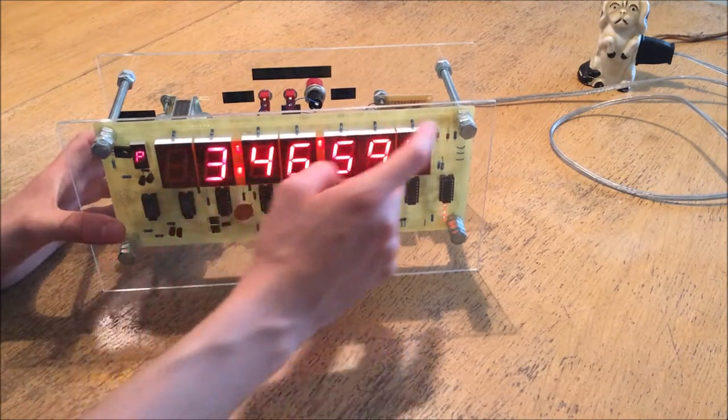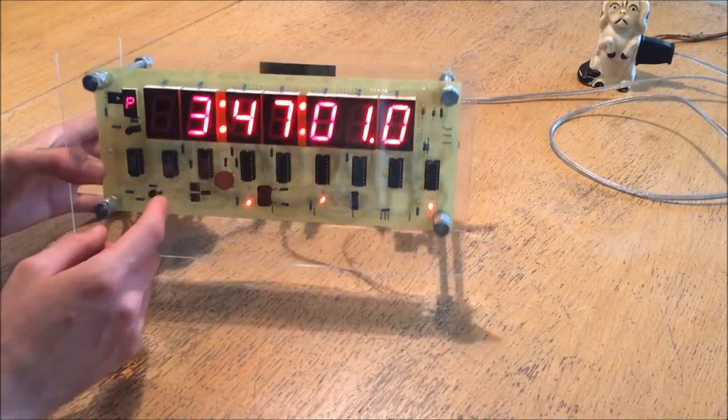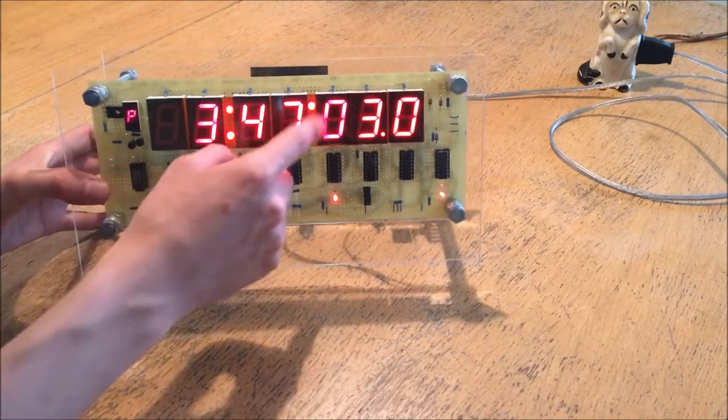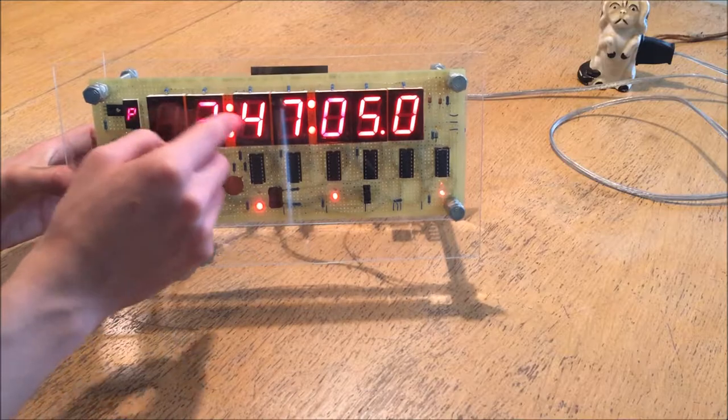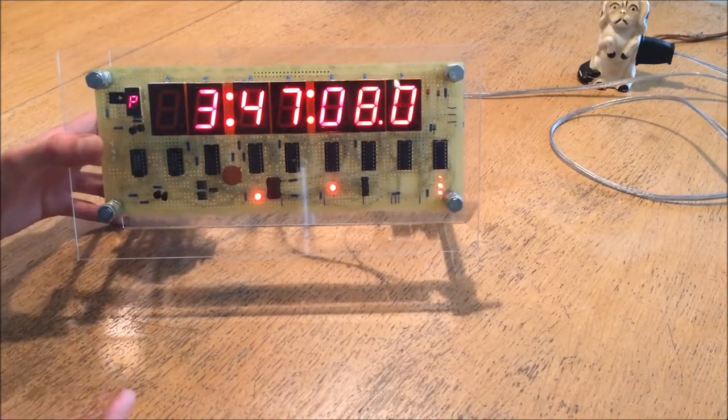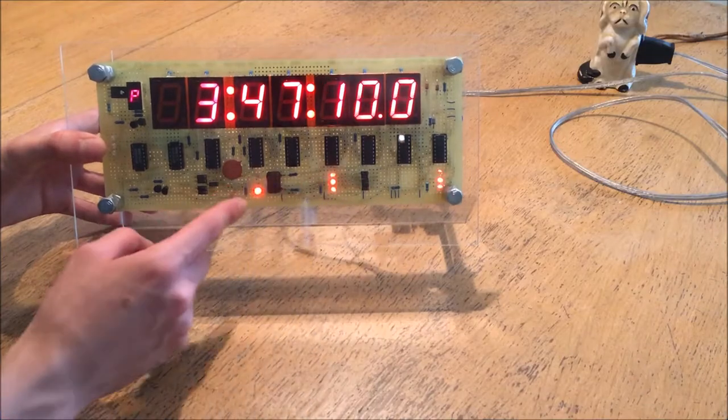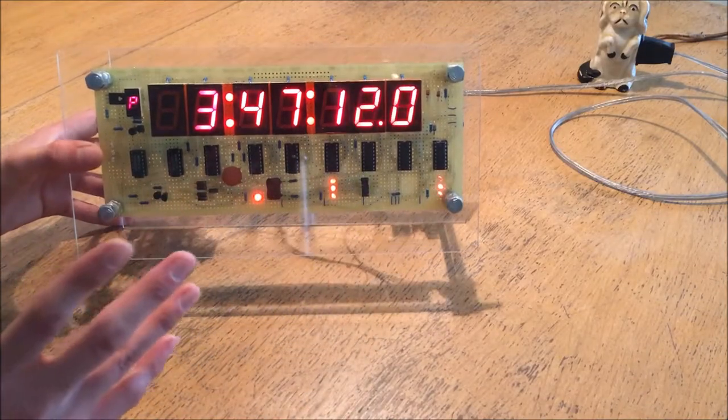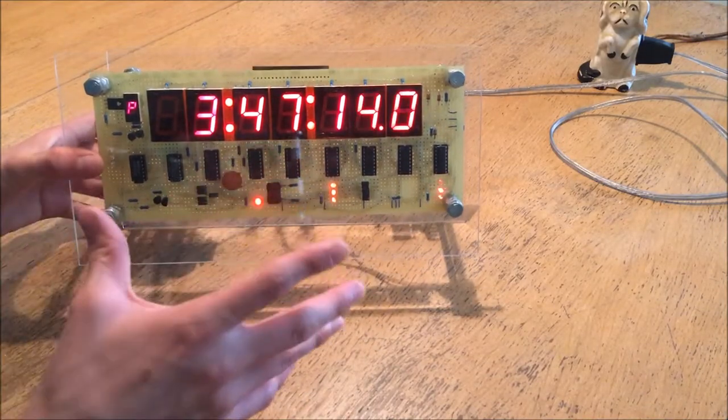It's made up of seven segment displays, pretty big ones at that, with the colons denoting hours, minutes, and seconds made out of red LEDs. And interestingly, there are a bunch of blinky lights down here which I will show you the function of later on.